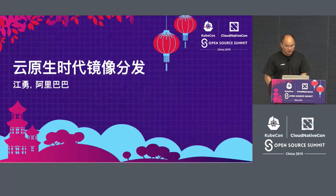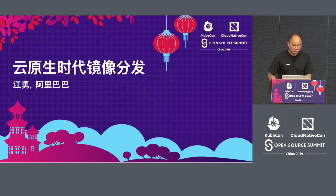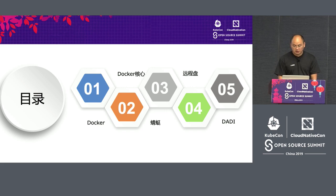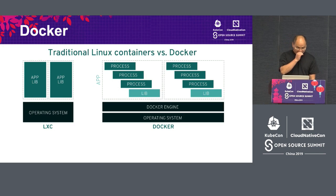My name is Jiang Yu from Alibaba. Today I will give a presentation on image distribution in container environments and what we have done in these aspects. For the agenda of my introduction, in the first part I will talk about the basic knowledge of Docker. And then we will talk about the Docker core and introduce the image and what we have done at the image level.